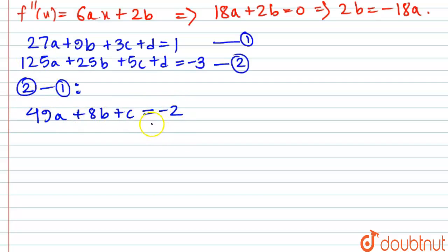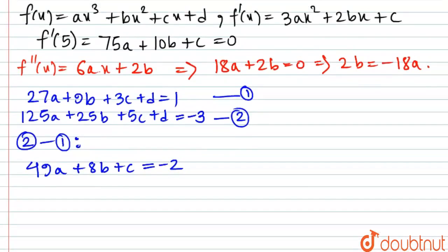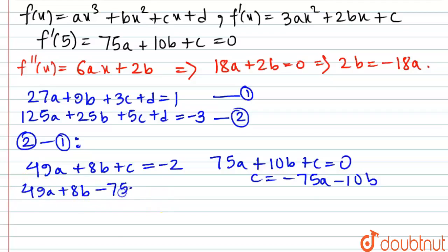Now we have another equation involving the parameter c and that is 75a + 10b + c = 0. So the value of c from here is c = -75a - 10b. Just put it here. If we just put it here, that is 49a + 8b, this value of c minus 75a minus 10b = -2.